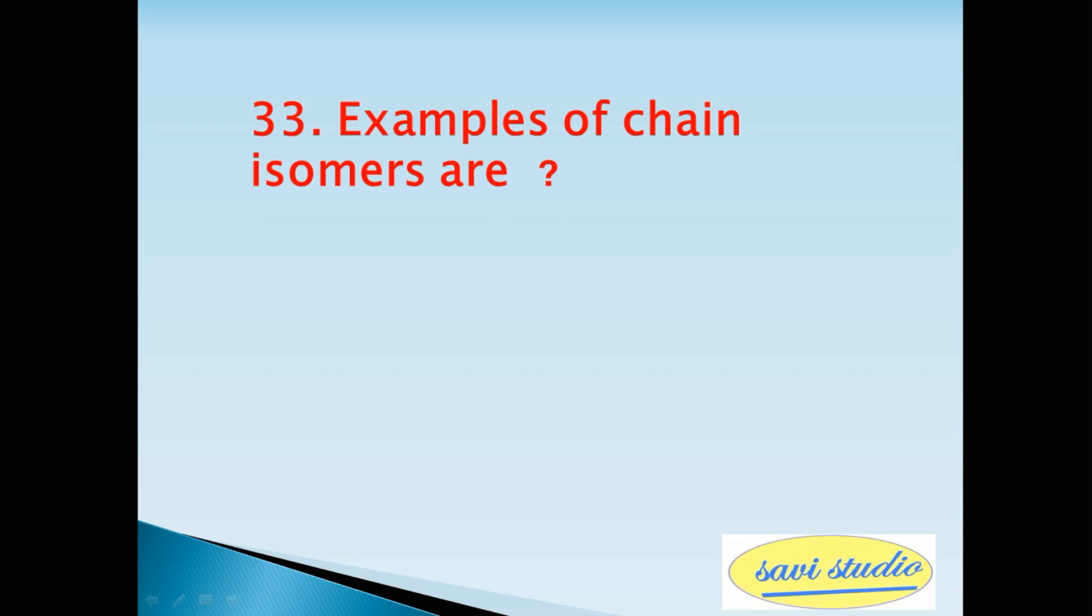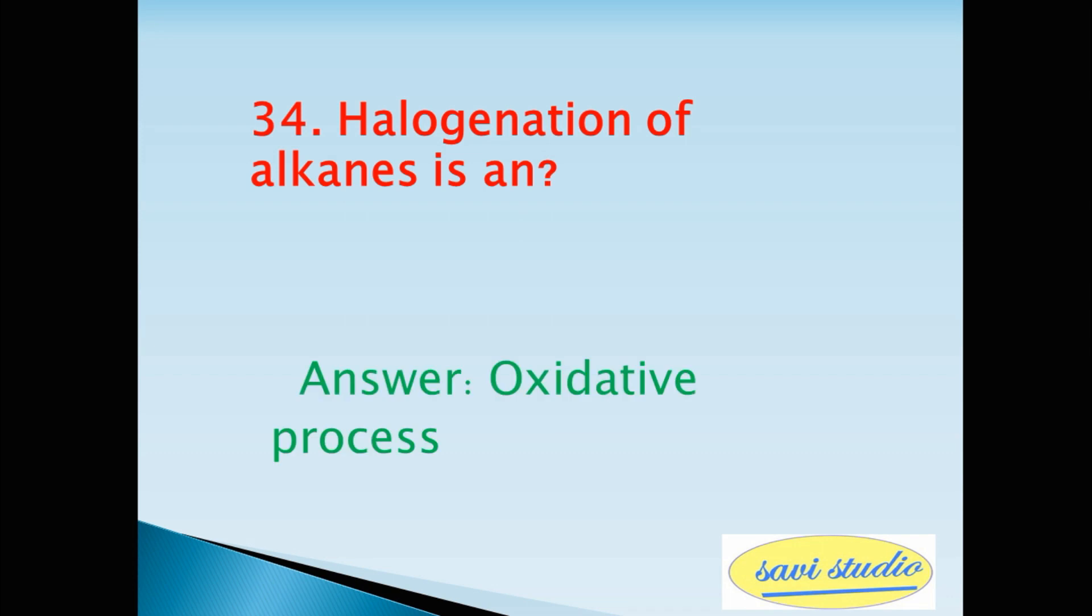Thirty-third question, examples of chain isomers are? Answer Propanol and methyl ethanoate. Thirty-fourth question, halogenation of alkanes is an? Answer oxidative process.